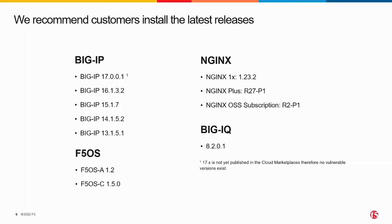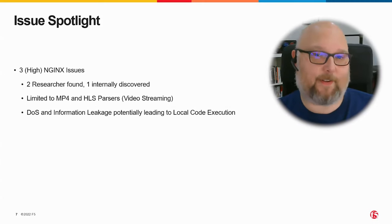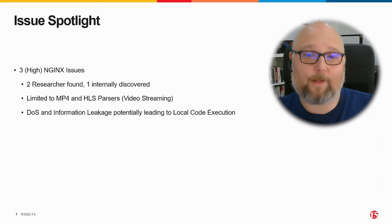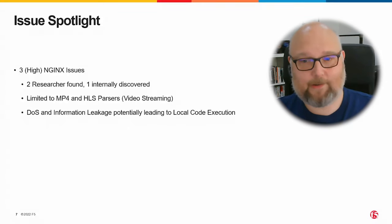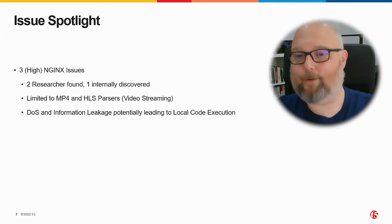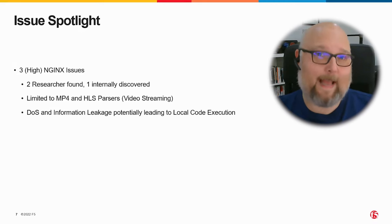For NGINX, this is the first time I think we've had to talk about this. These are the latest releases in each of the latest branches. There are actually fixes in NGINX 1.21 for NGINX open source, R26 for Plus, and R1 for OSS subscription, just in case you're on any of those. For NGINX, it is a good idea to try and be on the latest branch if you can. There are three NGINX issues: two were reported by an external researcher, one was discovered internally. They are limited to a very specific configuration — they only impact the MP4 module and the HLS module. HLS is unavailable on open source NGINX, so you're definitely not impacted if you are running open source.